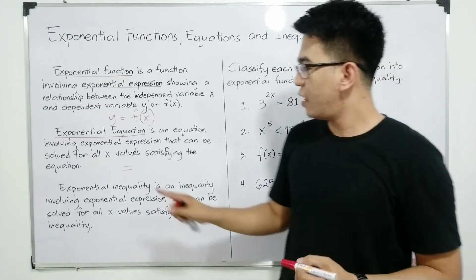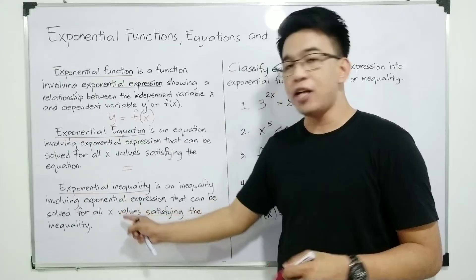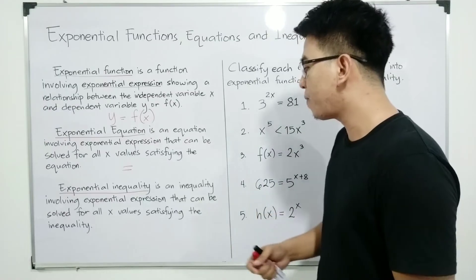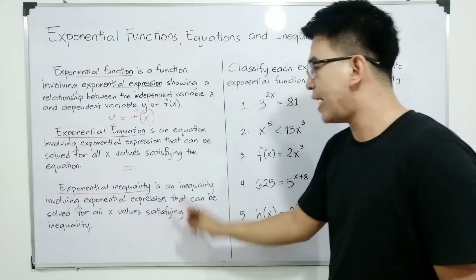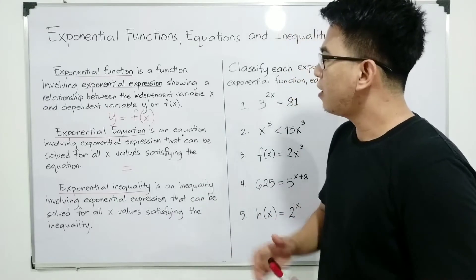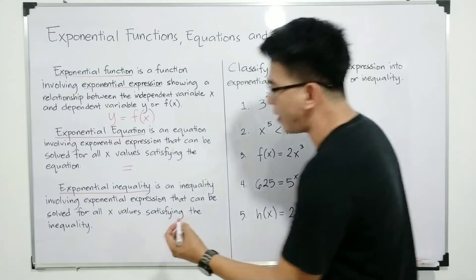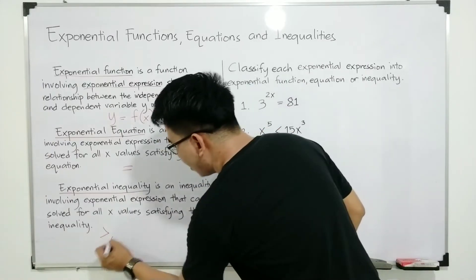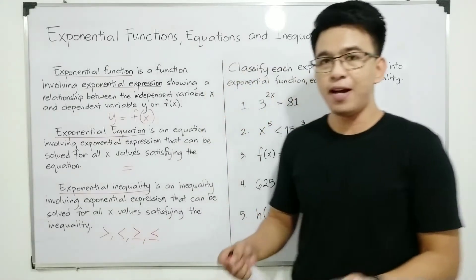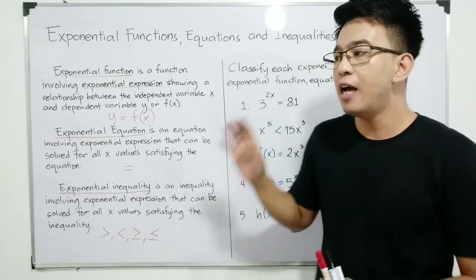Next, we have exponential inequality — it is an inequality involving exponential expressions that can be solved for all x values satisfying the inequality. All three types have exponential expressions; what distinguishes them are the symbols used. For exponential inequality, it uses inequality symbols — most likely you will encounter greater than, less than, greater than or equal to, or less than or equal to symbols.